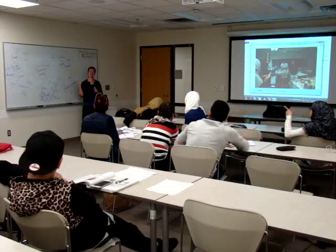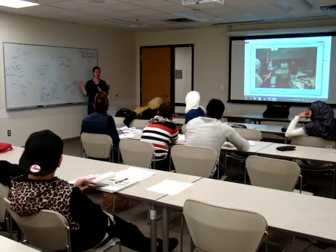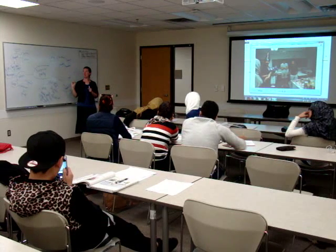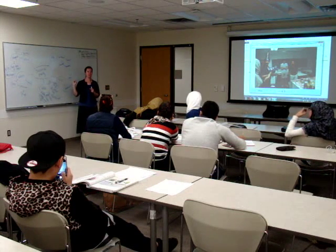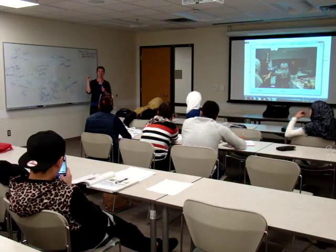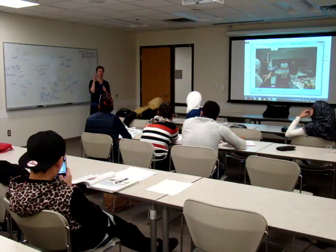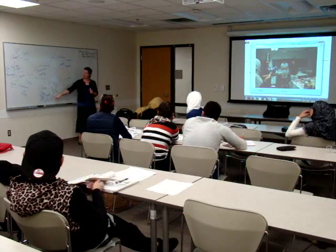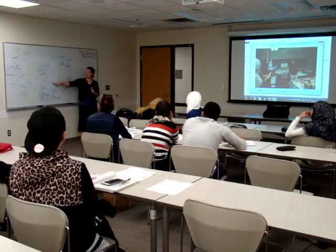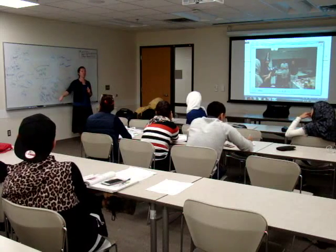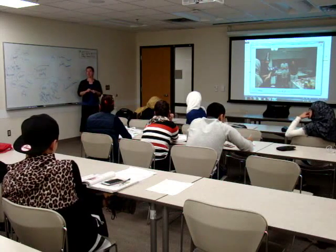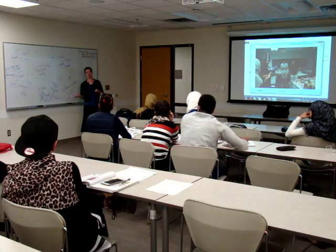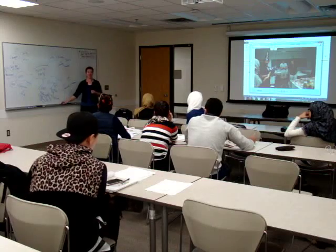What are you going to do? Make a bubble map about the picture, using the WH question words: who, what, where, when, and why. And on your what, when talking about what happened, put it in order one, two, three, so you can use that later on. Ready? Go ahead and get out your picture and start working on this.